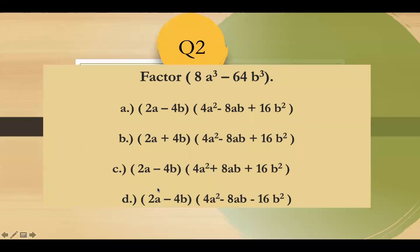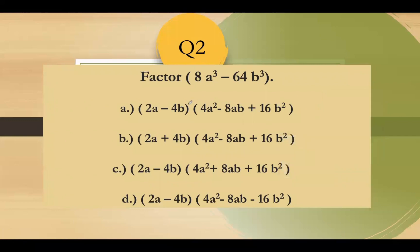Question number two: get the factor of 8a cubed minus 64b cubed. Since this is a perfect cube, you form the factors using the standard form a cubed minus b cubed. You form a binomial by getting the cube root of a, copying the sign, then the cube root of b. Then you square the first term, change the sign, multiply the first and the second, and square the last term.